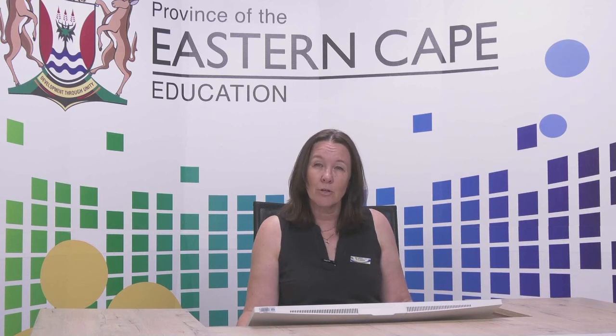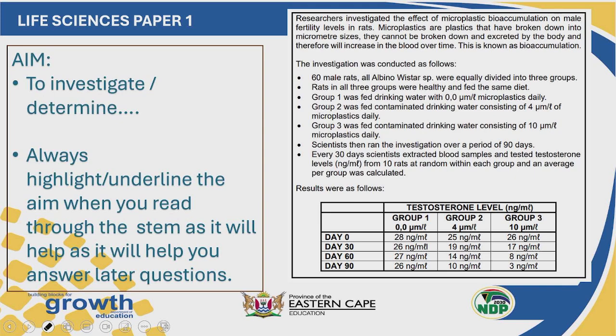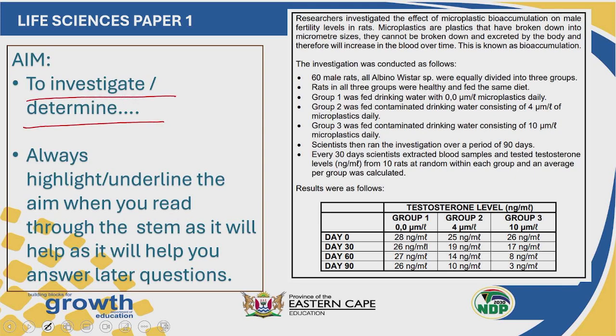Let's look at the scientific investigation. The scientific investigation is asked in both Paper 1 and Paper 2, and by now you are very used to having a scientific investigation in every exam paper. This is an area where you can gain very easy marks — something you should have learned since grade 10. Every investigation has to have an aim, and we recognize the aim by the sentence which says 'to investigate' or 'to determine.' These words are guiding words to where the aim of the investigation is.